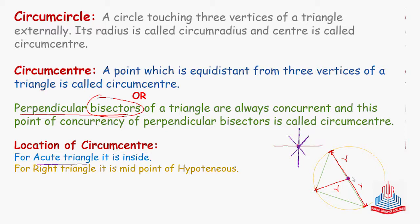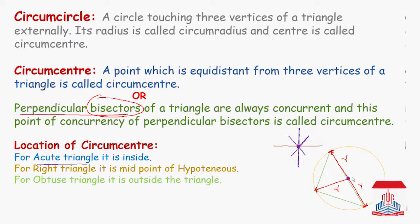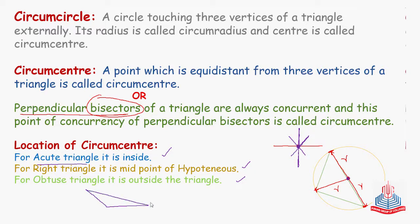For an obtuse triangle — where one angle is greater than 90 degrees — the circumcenter lies outside the triangle. So there is a progression: in an acute triangle the center is inside, in a right triangle it is at the midpoint of the hypotenuse, and in an obtuse triangle it moves outside. For an obtuse triangle, the circumcenter will be somewhere in the exterior region, and the circumcircle will still pass through all three vertices.